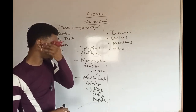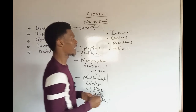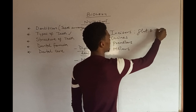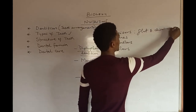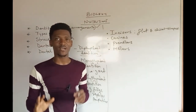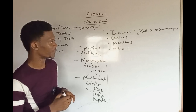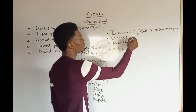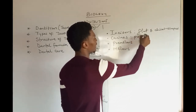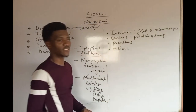Considering the incisors: they are known to be flat and chisel-shaped teeth. They are basically used for cutting and for holding of food materials. For the canines, these are known to be pointed and sharp.